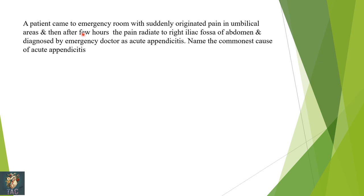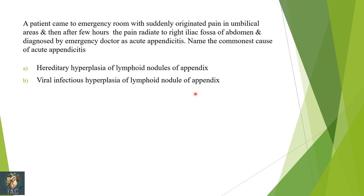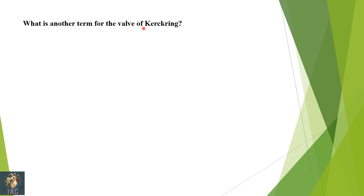A patient came to the emergency room with pain originating in the umbilical area, then radiating to the right iliac fossa, diagnosed as acute appendicitis. The commonest cause is — hereditary hyperplasia of lymphoid nodules, viral infectious hyperplasia, impaction of food material in the appendix, or worm infestation? Impaction of food material in the appendix is the most common cause of acute appendicitis. So the correct option is C.